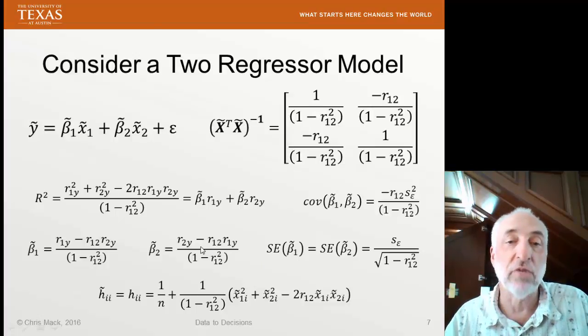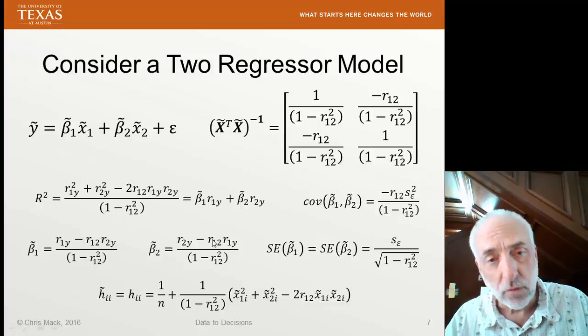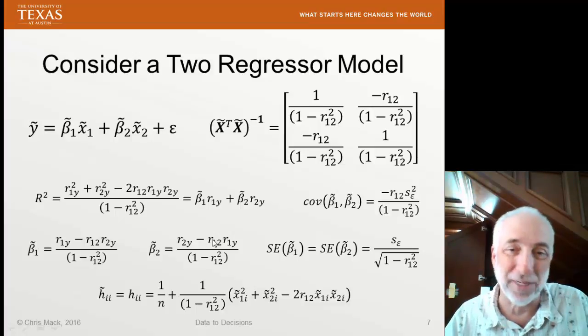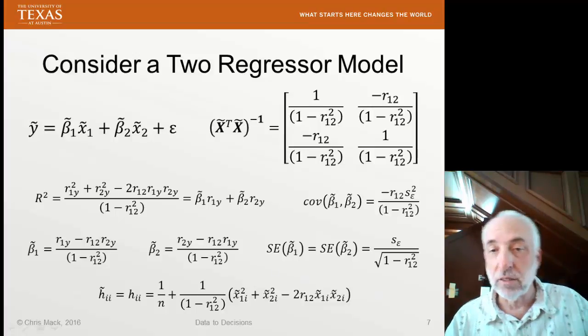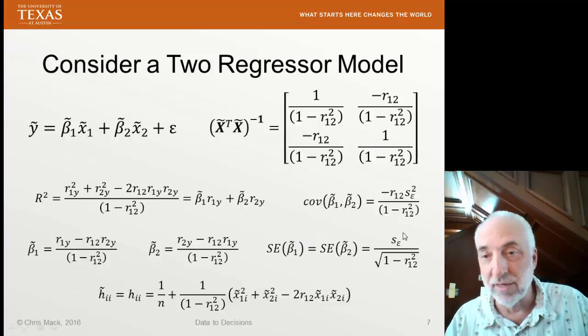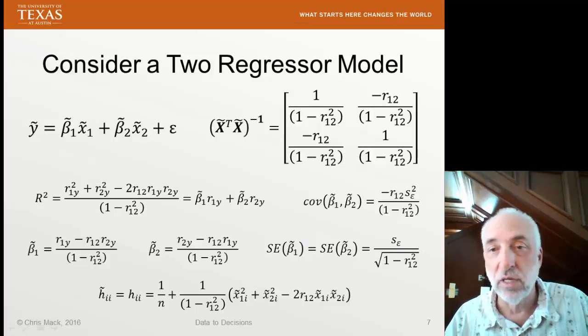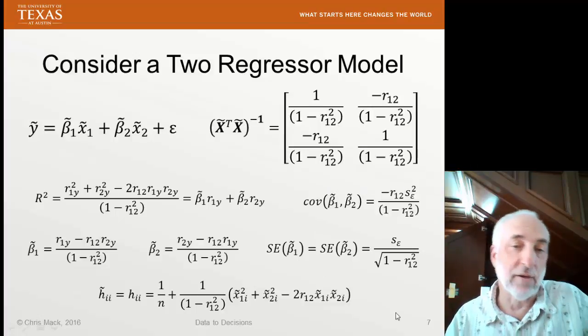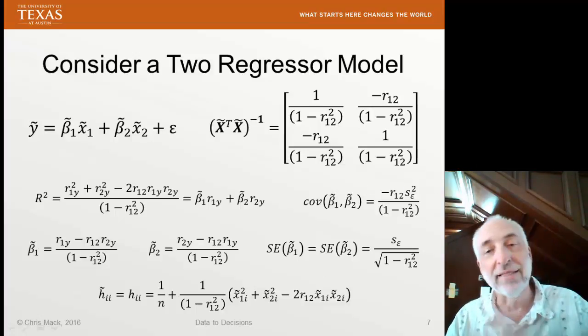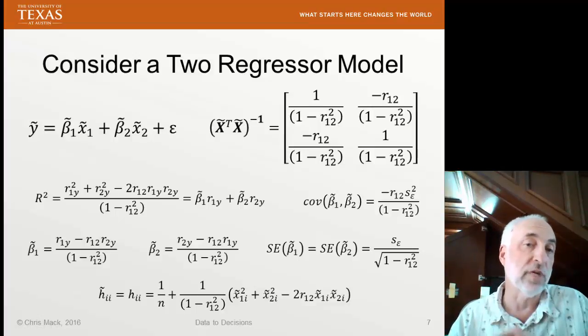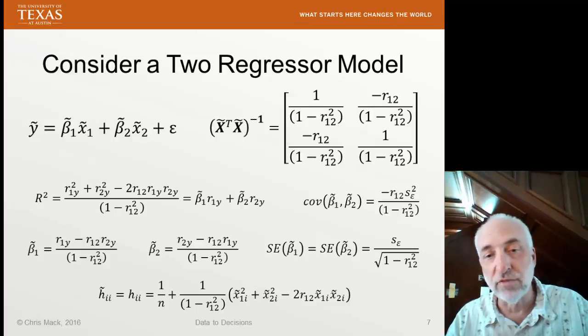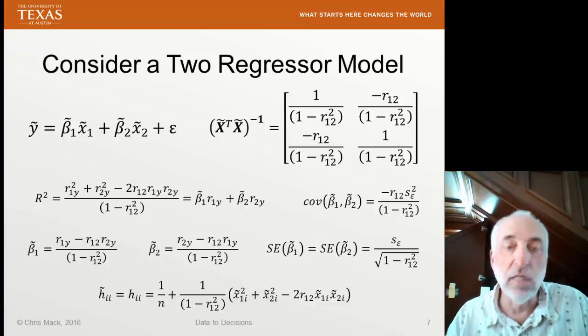If I have that special case of orthogonal variables x1 and x2, so that r12 is 0, see that the standard errors are simply the standard deviation of the residuals, there's no covariance, covariance goes away, et cetera. That idea of having no correlation between our two variables has lots of advantages that become clear in this formulation.